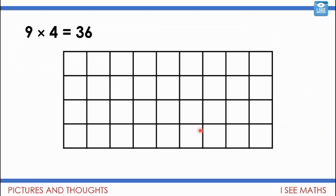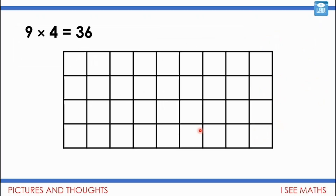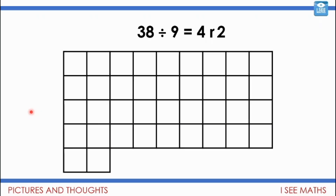Hopefully you can see why we've done this to help you with division. In the same way we've looked at area models for multiplication — nine times four equals 36, four lots of nine — I can also look at this area model by thinking: 36 in total, how many lots of nine in 36? There are four. So we can see how division is the inverse of multiplication. If I'm thinking about 38 divided by 9, my model changes slightly: how many whole nines in 38? Four, with two left over. So 38 divided by 9 is four remainder two.